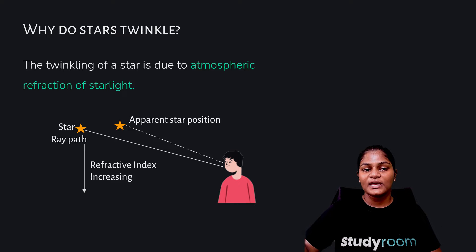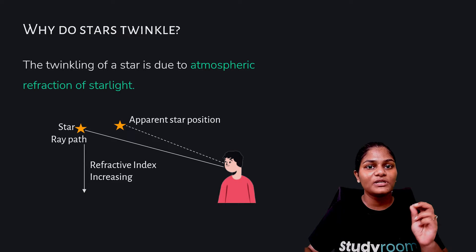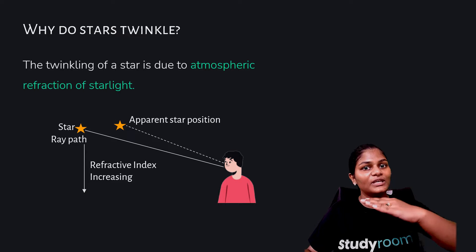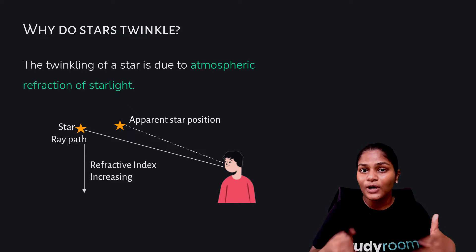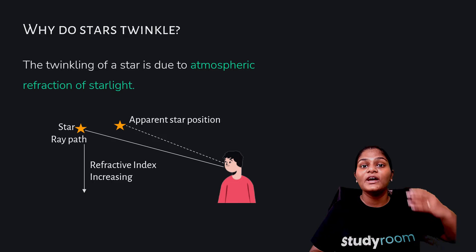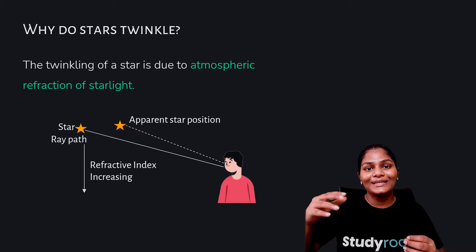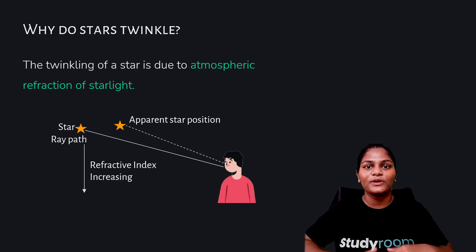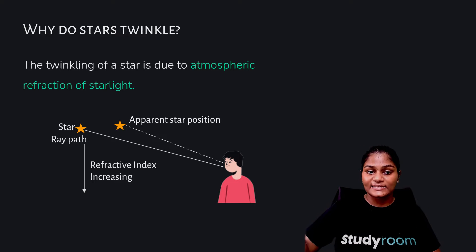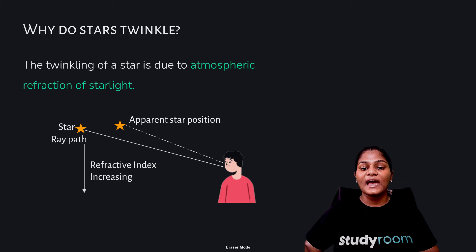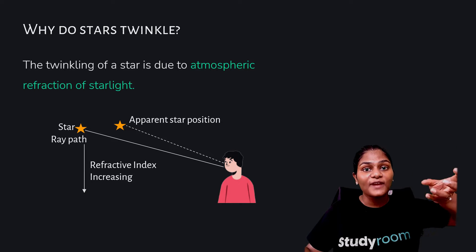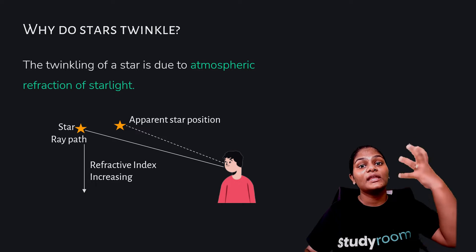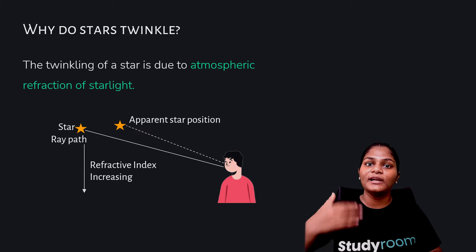If this is the original position of the star, the light from the star has to go through different layers of the atmosphere — the stratosphere, troposphere, exosphere, mesosphere. All these different layers basically have different refractive indices. The refractive index keeps increasing as we come from the outermost layer to the innermost layer, meaning the atmosphere keeps getting denser and denser.